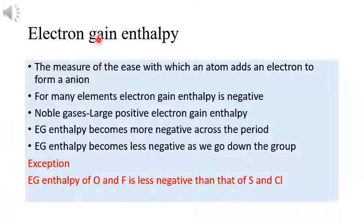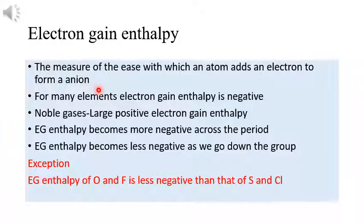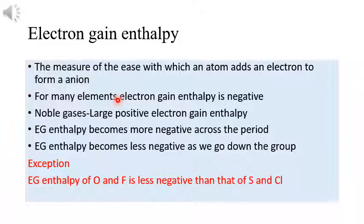Next is electron gain enthalpy. By definition, it is the measure of the ease with which an atom adds an electron to form an anion. For many elements, electron gain enthalpy is negative because energy is released when an atom accepts an electron. Noble gases are highly stable and do not need to accept an electron, so they have a large positive electron gain enthalpy.